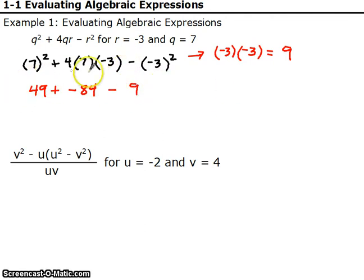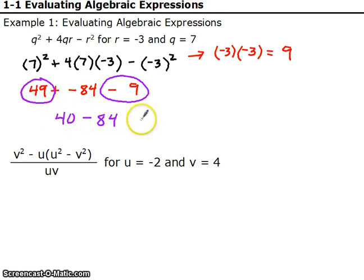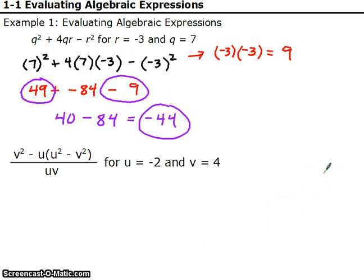So let's finish this up. 49 plus negative 84 — that's a hard calculation to do in your head, but look: we can do 49 minus 9 first. That's 40. Then 40 minus 84 is a lot easier — that's negative 44. Remember with addition, you can just flip the numbers around and do them in any order that you want, as long as you keep the signs in the right spot.